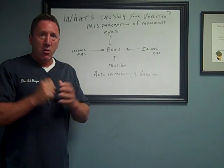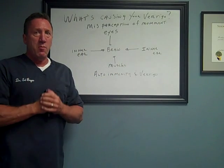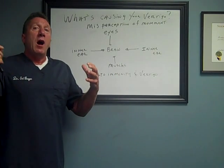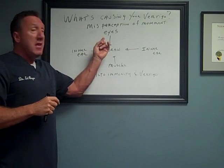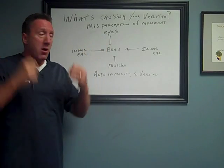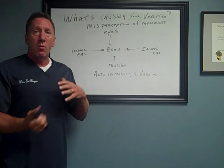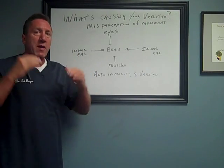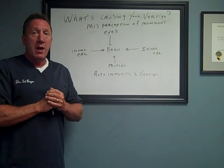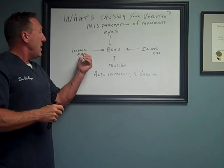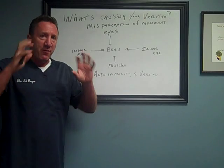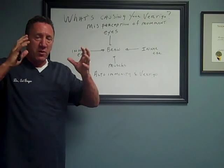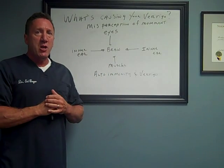The brain is a sensory organ — it receives information. Where does it receive information about movement? We can see when we're moving, so it gets information from our eyes. Our muscles have little receptors in them, and when we move — especially in our neck, tons of receptors there — it can send that information to the brain saying we're moving. And then we have these canals in our inner ear that are filled with fluid, and when we move our head and body a certain way, that fluid moves and sends that sensory information into the brain.